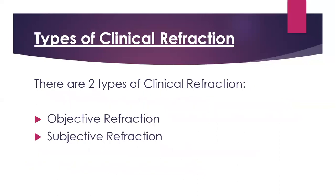There are two types of clinical refraction: objective and subjective. Objective indicates that an instrument does all the work, and there is no need for the patient's active participation. While subjective means the subject — our patient — is central, and we need the active participation of the patient. In objective refraction, the result is not based on the patient; it is totally dependent on the instrument.